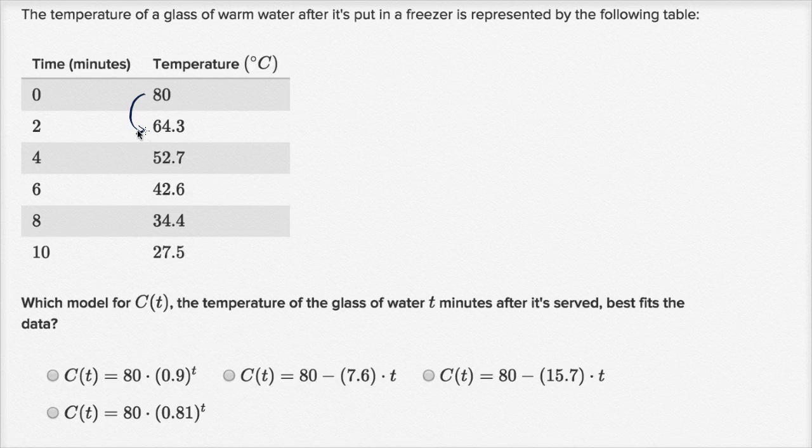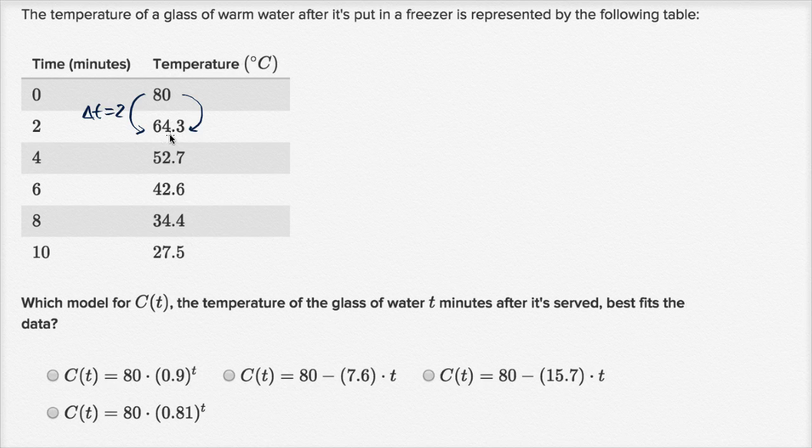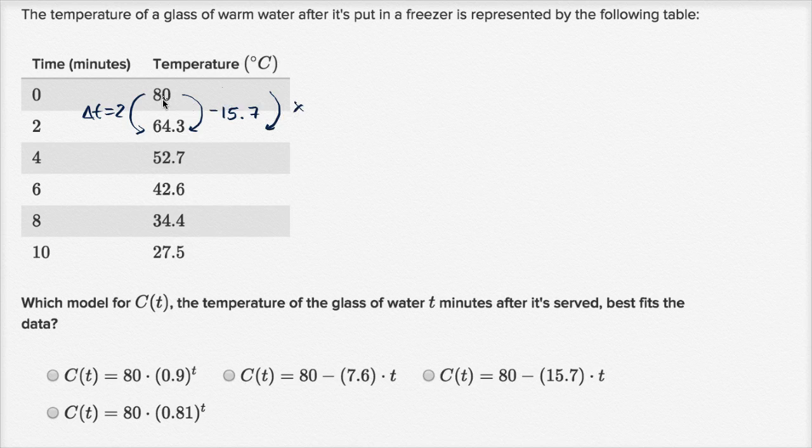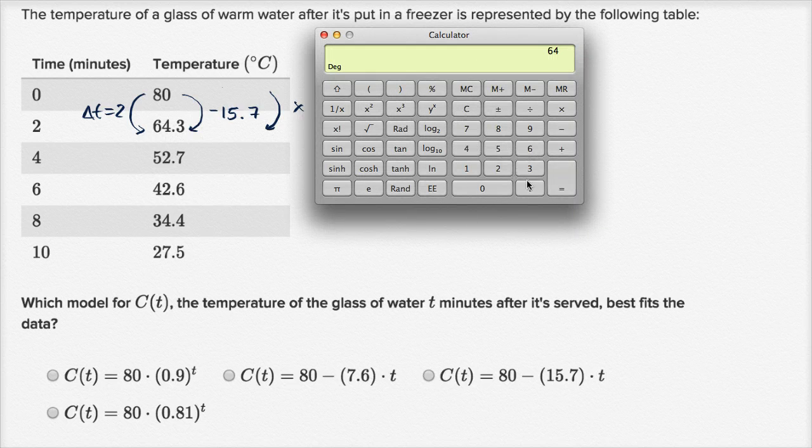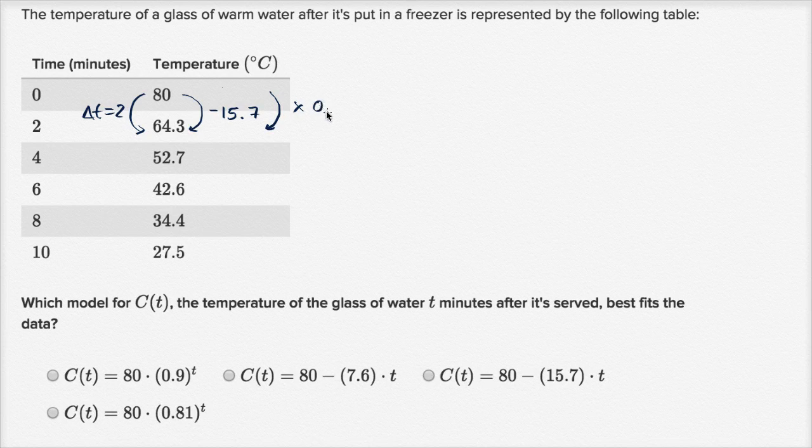So let's think about this. Our change in time is two minutes. What is the absolute change in temperature? So our absolute change in temperature is negative 15.7. And what if we viewed it as a multiplication? What do we multiply 80 by to get 64.3? So 64.3 divided by 80 is equal to approximately 0.8. So to get from 80 to 64.3, I could either subtract by 15.7 if I'm dealing with a linear model, or I could multiply by 0.8.